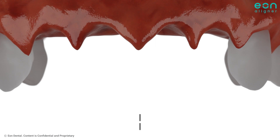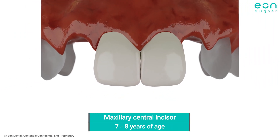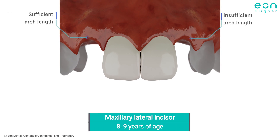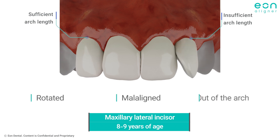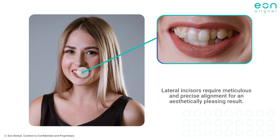This primarily arises from their eruption sequence occurring after the central incisors, and whenever there is insufficient arch length, they will tend to erupt either rotated, malaligned, or out of the arch. Owing to their prominent anterior placement, these teeth tend to catch the eye of both patients and practitioners, and usually require meticulous and precise alignment for an aesthetically pleasing result.